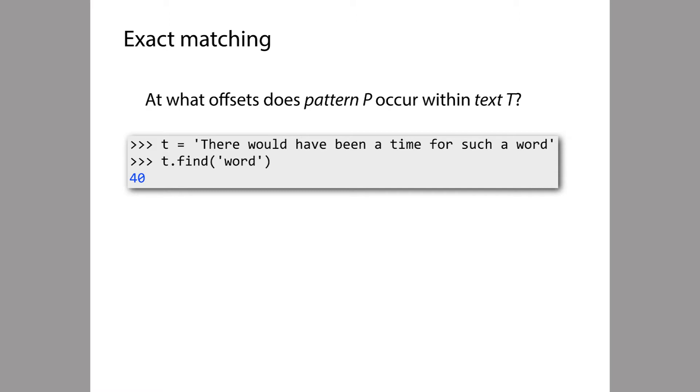What find will do is you give it an argument, which is a string, and it'll return the offset of the leftmost occurrence of that argument inside the string. The string that we're calling the method on is our text, and the argument that we're passing is our pattern. Python reports that the leftmost occurrence is at offset 40. If we want to find all the places where the pattern occurs, not just the leftmost place, we have to do something a little more complicated, but you get the idea.